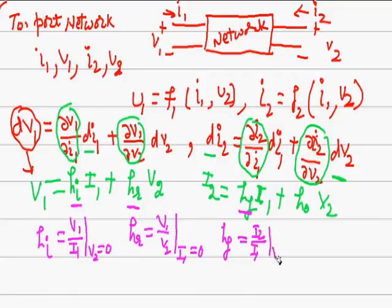HO is output admittance. It is a ratio of I2 upon V2 when input circuit is open, that is I1 equals zero, meaning no current is flowing in the input circuit.